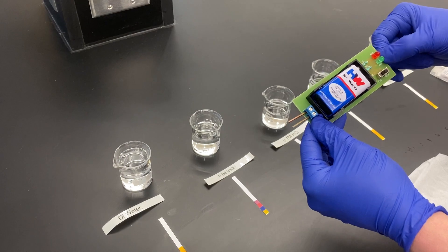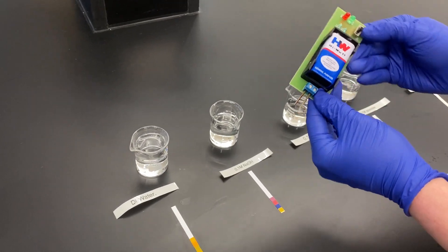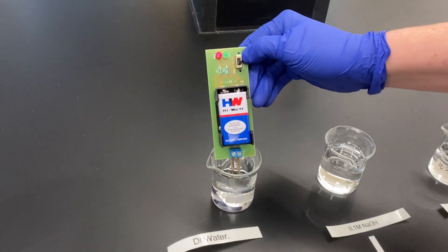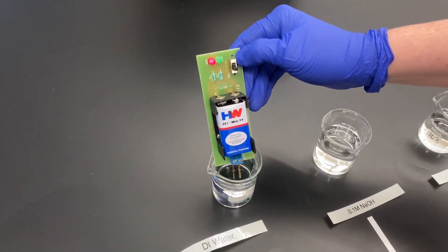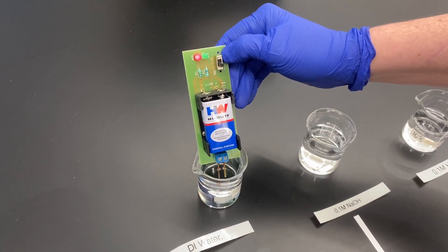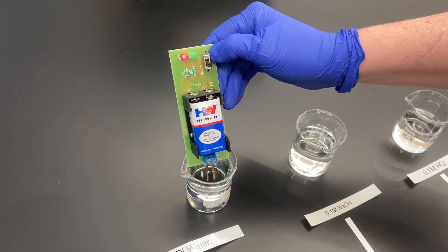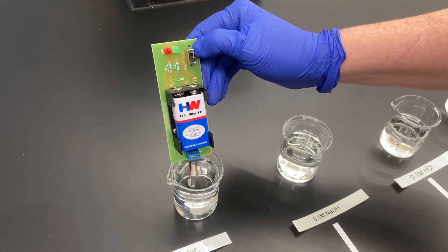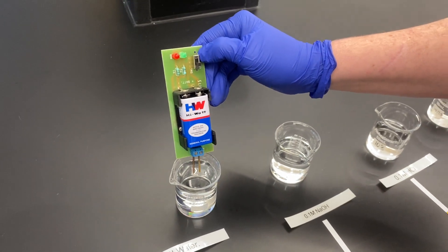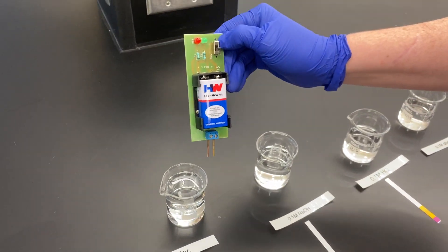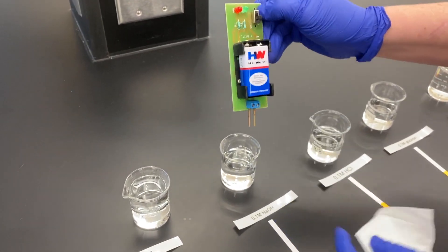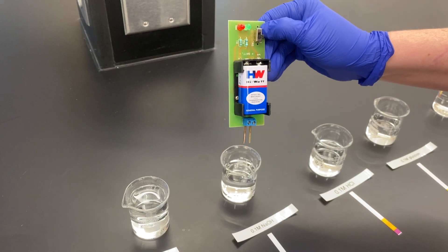Our DI water is conductive because we have some incorporation of atmospheric CO2, which adds more ions than you would normally expect in deionized water. We're going to wipe off between each step. You can see the red in the DI water means low conductivity.